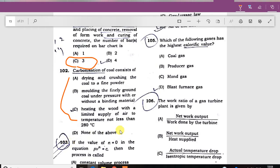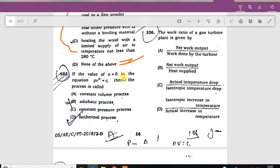If the value of n is equal to one in the equation p times p to the power n by c, then the process is called isothermal process. It's called isothermal process.